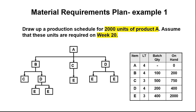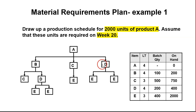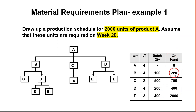Hi, assalamualaikum. Now I will show you MRP example one. This question is a bit more complex because they have more than one level. In example two we had only level one, but this time we have level two and three. The information given includes lead time, lot size, and on-hand inventory. They give us 200 units of product A, and product A needs to be completed at week 20.